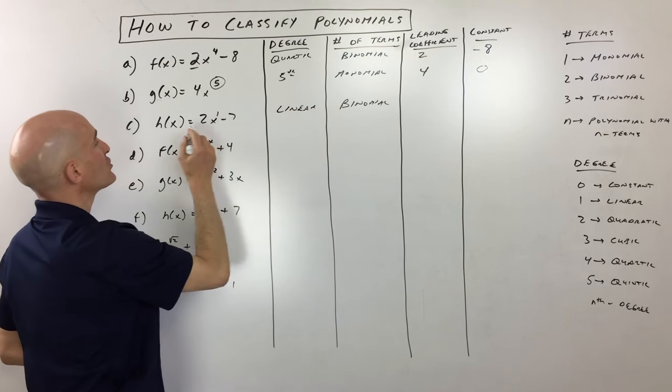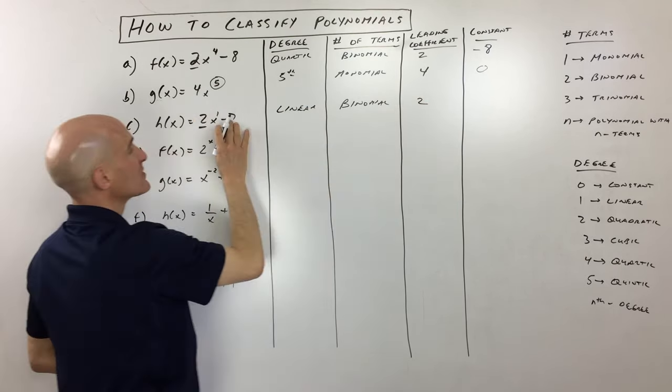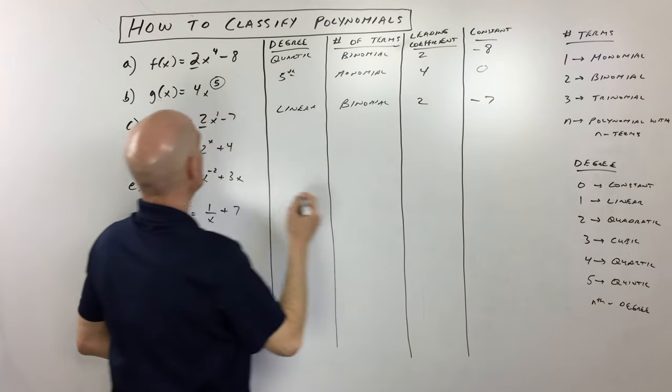And then the leading coefficient is two, and the constant term is negative seven. Let's go to the next one.